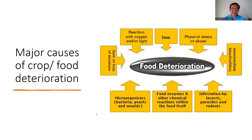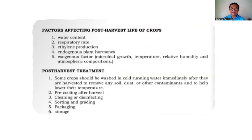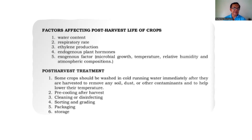The major causes of crop deterioration are: growth and activities of microorganisms — principally bacteria, yeast, and molds; activities of natural food enzymes; insects, parasites, and rodents; temperature — both heat and cold; and time. Here is the post-harvest chain for grains: harvesting, pre-drying, pre-cleaning, drying, storage, processing, and marketing. Factors affecting post-harvest life include water content, respiratory rate, ethylene production, endogenous plant hormones, microbial growth, temperature, relative humidity, and atmospheric composition.